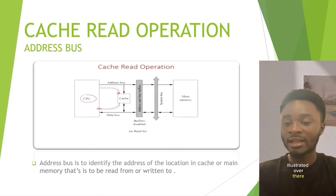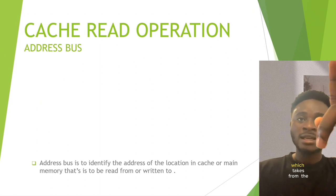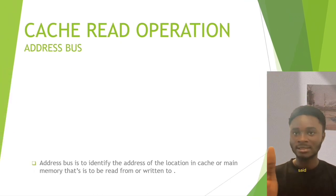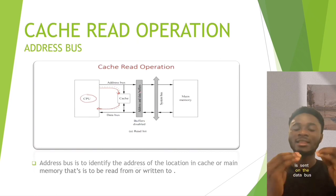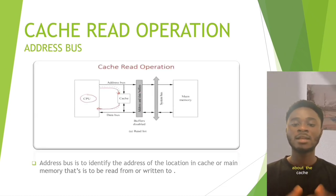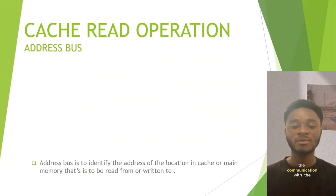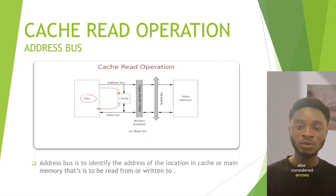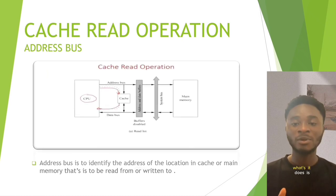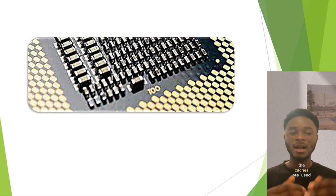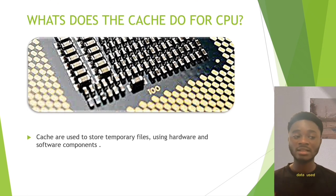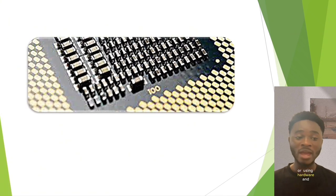As you can see in the diagram, the arrows go from the address bus to main memory and back to the CPU — confirming that memory data is sent on the data bus back to the CPU. Moving on to the cache: the cache is used to store temporary data using hardware and software components. The cache in the CPU helps speed up data access by storing frequently needed information.